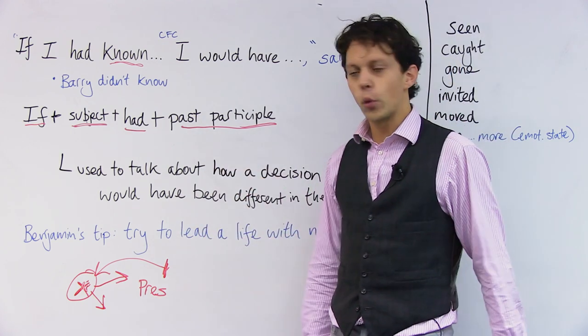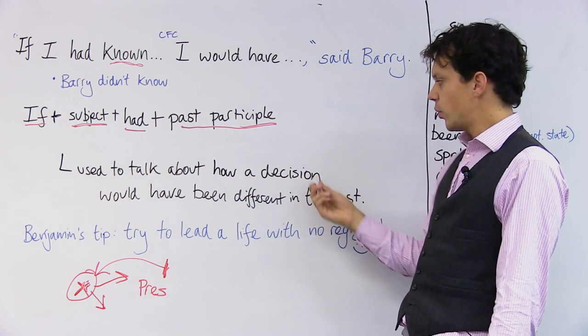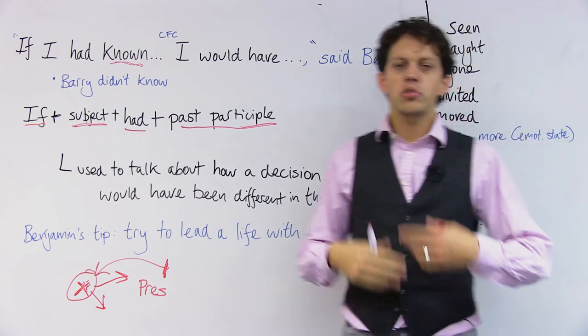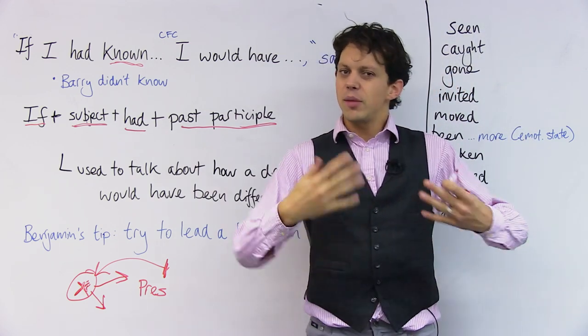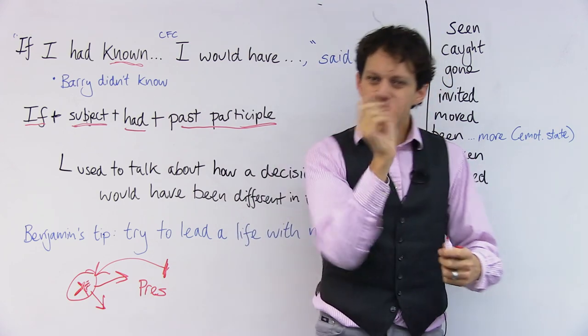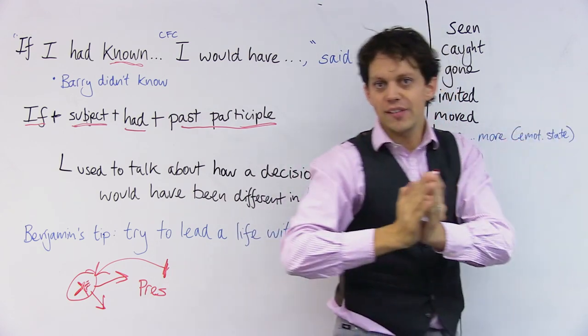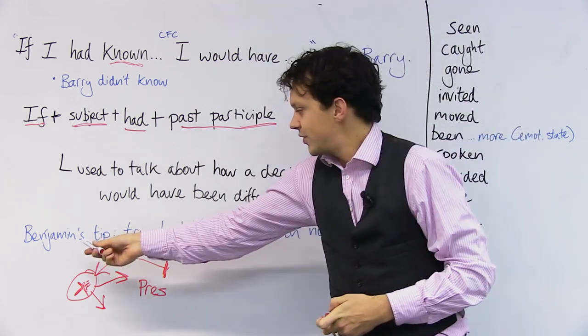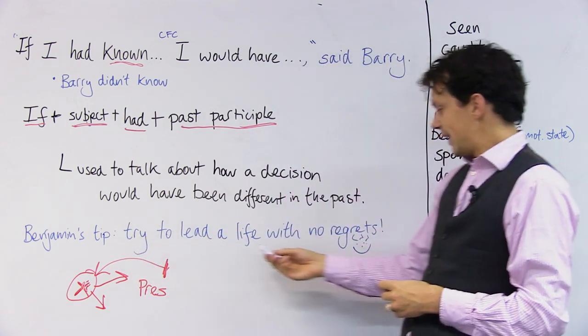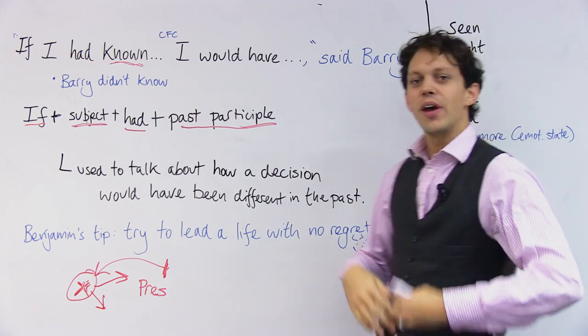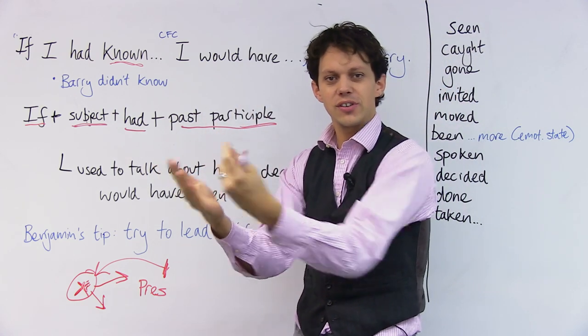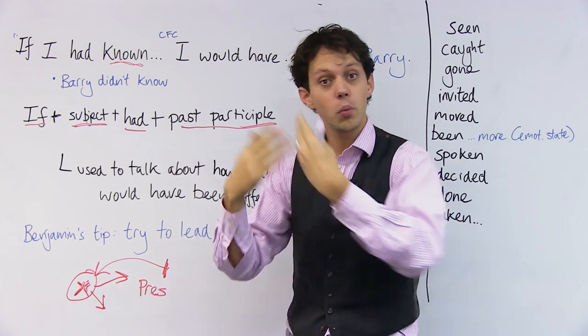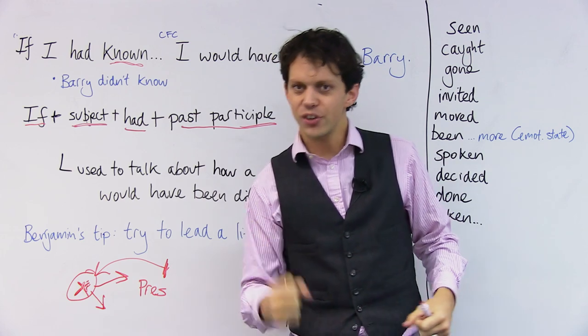So what do we use it for? Well, it's used to talk about how a decision would have been different in the past. So I'm sure you can all think of examples of times in your life where if you had done something a little different, life would have maybe been a little bit better. My top tip for you: you want to try and lead a life with no regrets. So make lots of good decisions. Because it's easier to think about what we didn't do than what we did do. So take action, get involved.